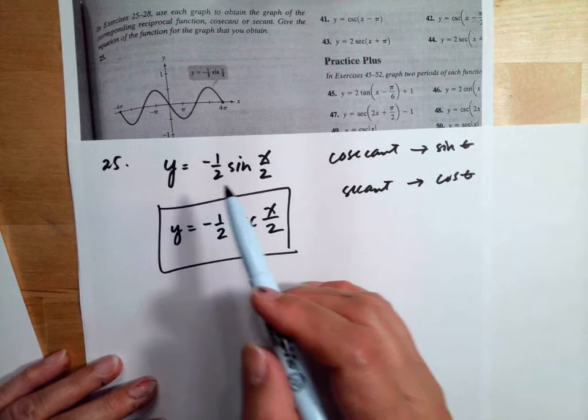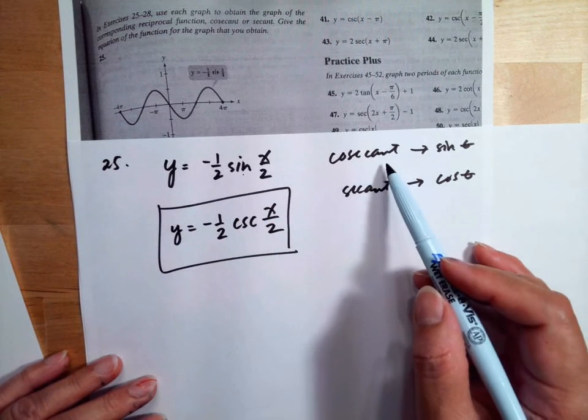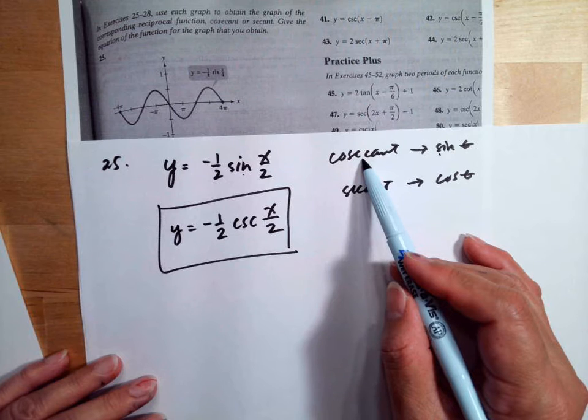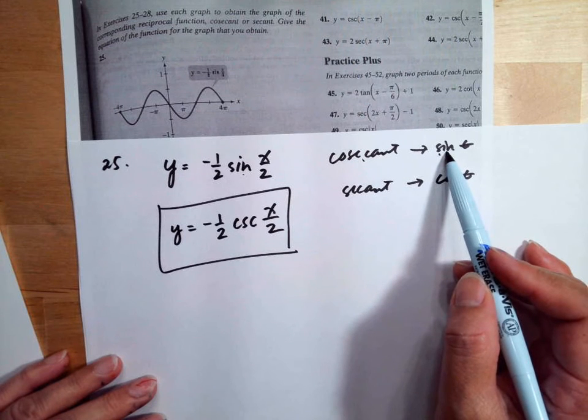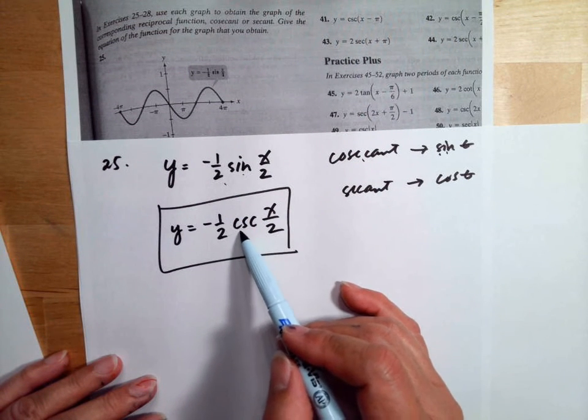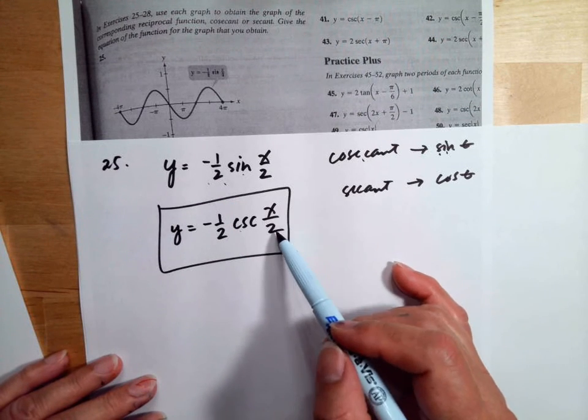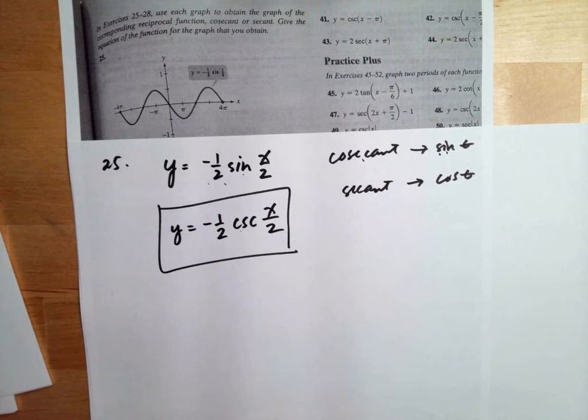Again, you need to look at what is given. It's sine. If it is sine, we graph cosecant using sine. So this equation will be cosecant and you will use the same amplitude and the same angle. That's how to do these problems.